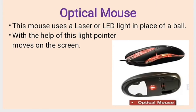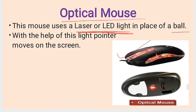Now, what is an optical mouse? This mouse uses a laser or LED light instead of a ball. With the help of this light, the pointer moves on the screen. Optical is related to light. When you see it from the upper side it looks like this, and from the left and right side you will see one red color light. From the downside, instead of a ball, you see this light blinking. So the mouse pointer moves with the help of this light movement.